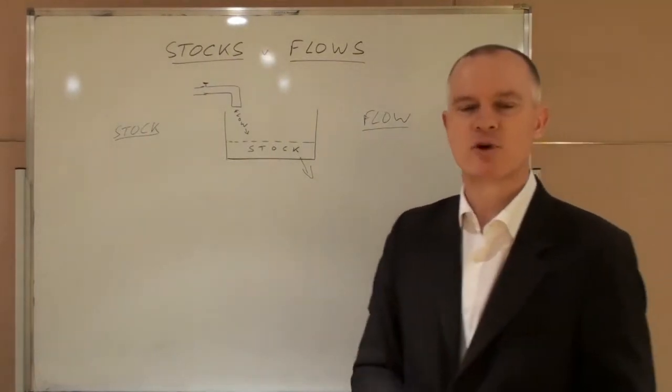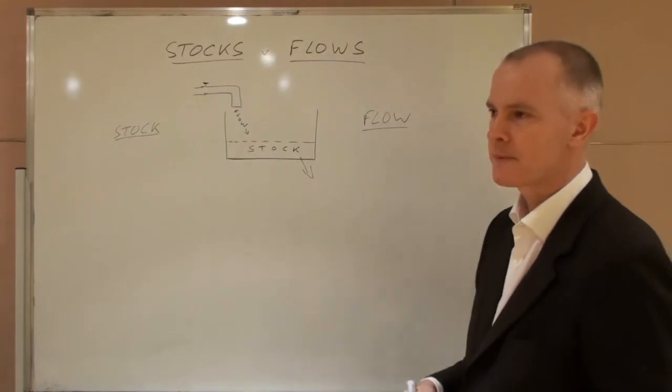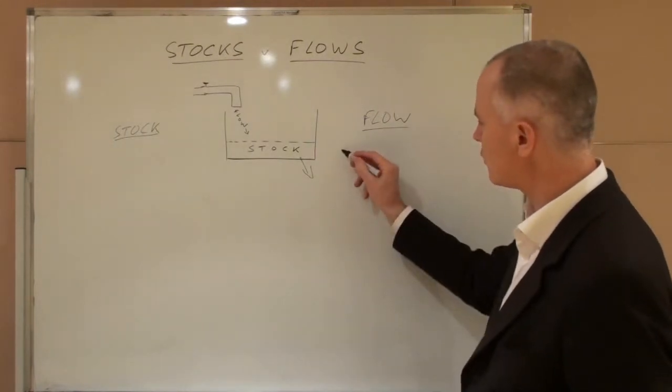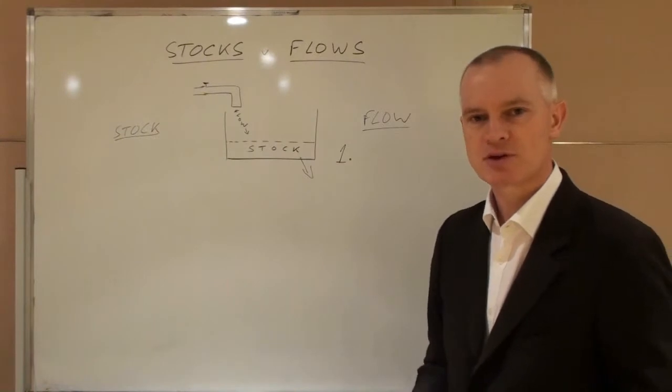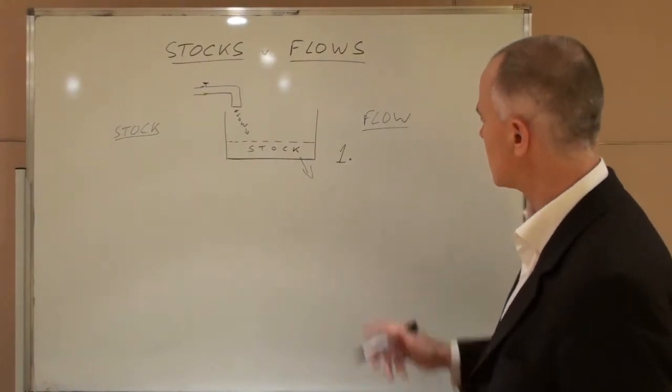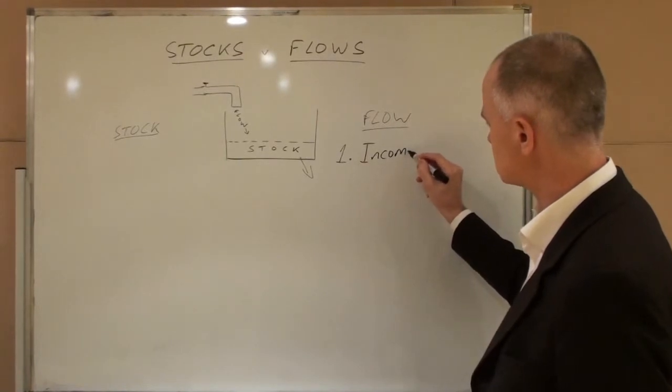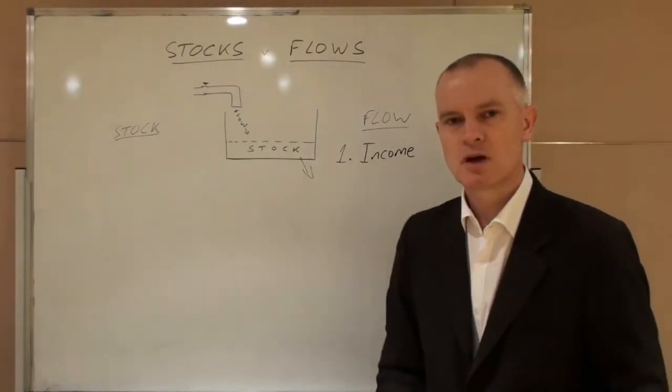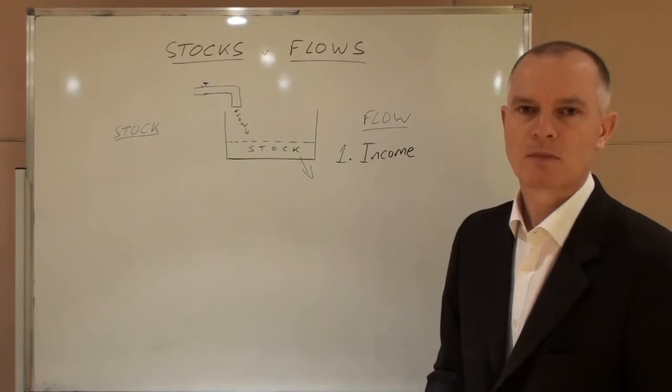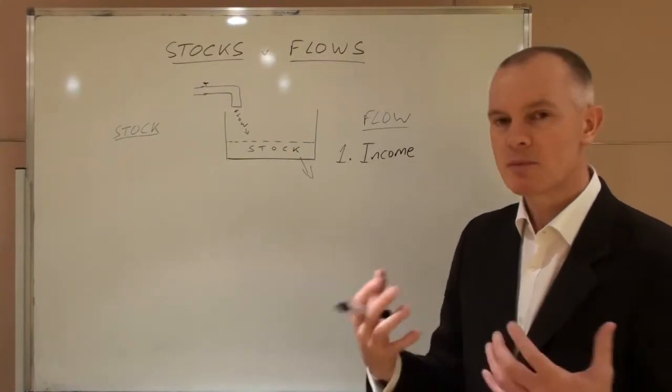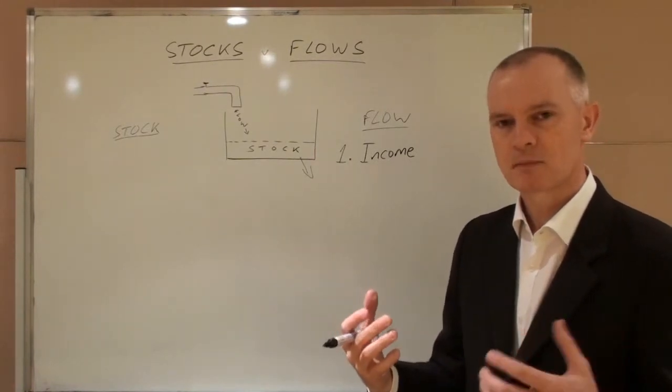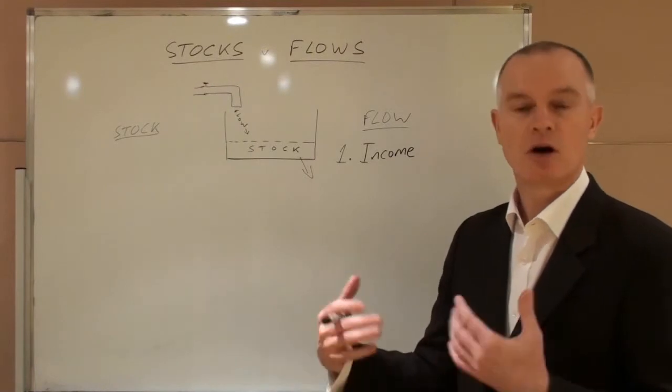Now how does this matter for A level or IB economics? Well the principal flow that people tend to come across at this level of economics is income. If you are asked your income you must reply with some element of time. How much are you paid? Two thousand dollars.